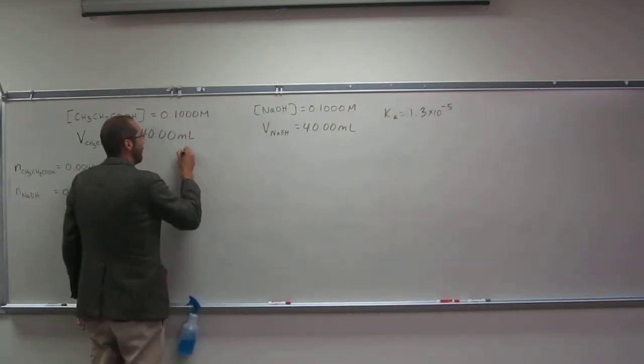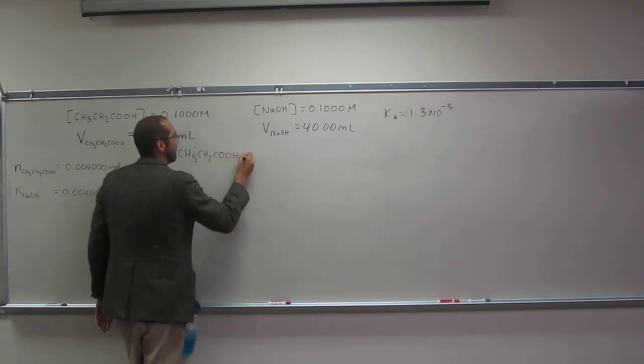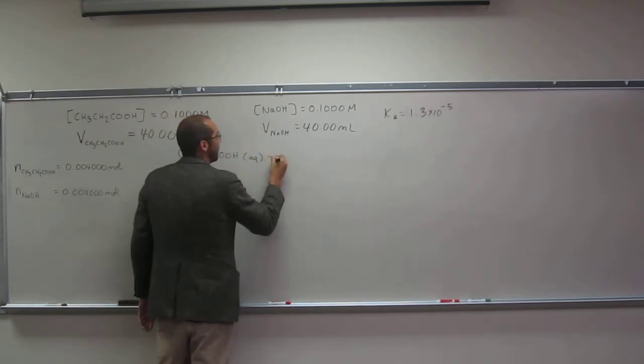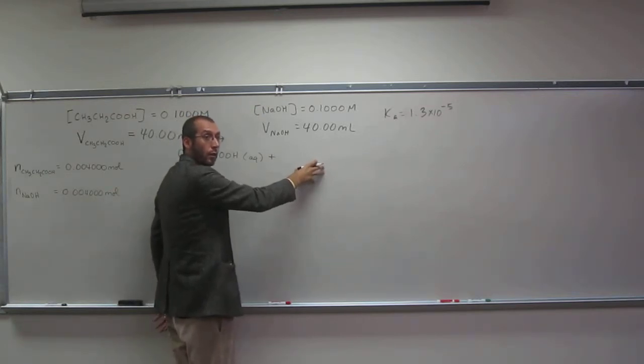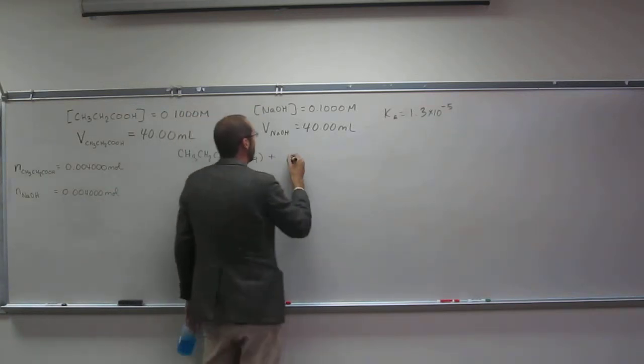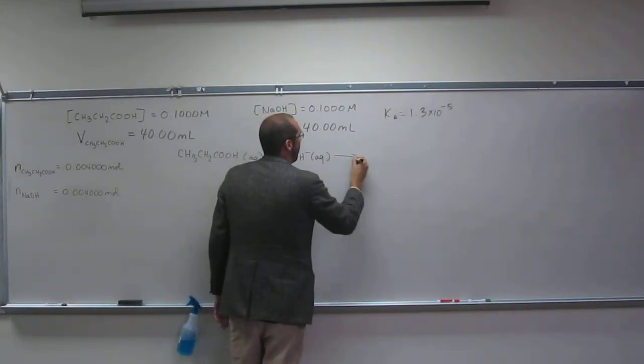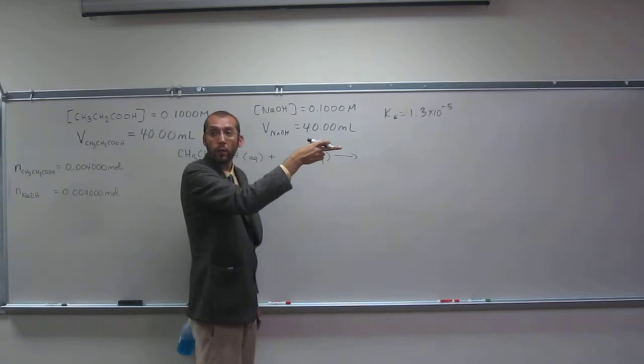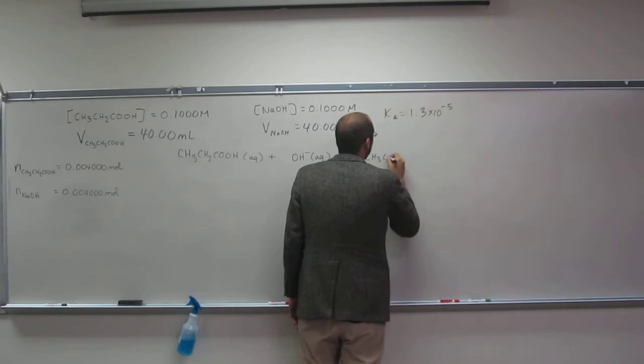So, the first ICE table: CH3CH2COOH aqueous plus sodium hydroxide. But for sodium hydroxide, we're just going to put the OH minus and that goes forward.